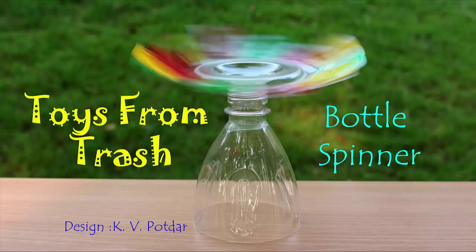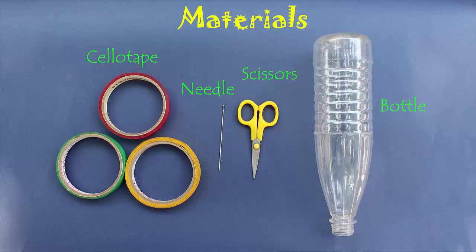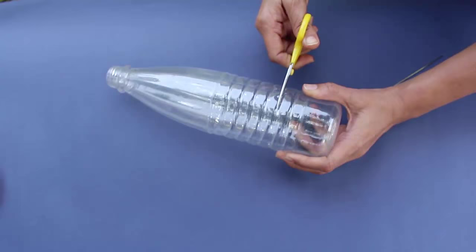To make this bottle spinner you will need a throwaway plastic bottle, scissors, needle and decorative color tapes. First make a hole in the bottle with a needle about 10 cm from the base.